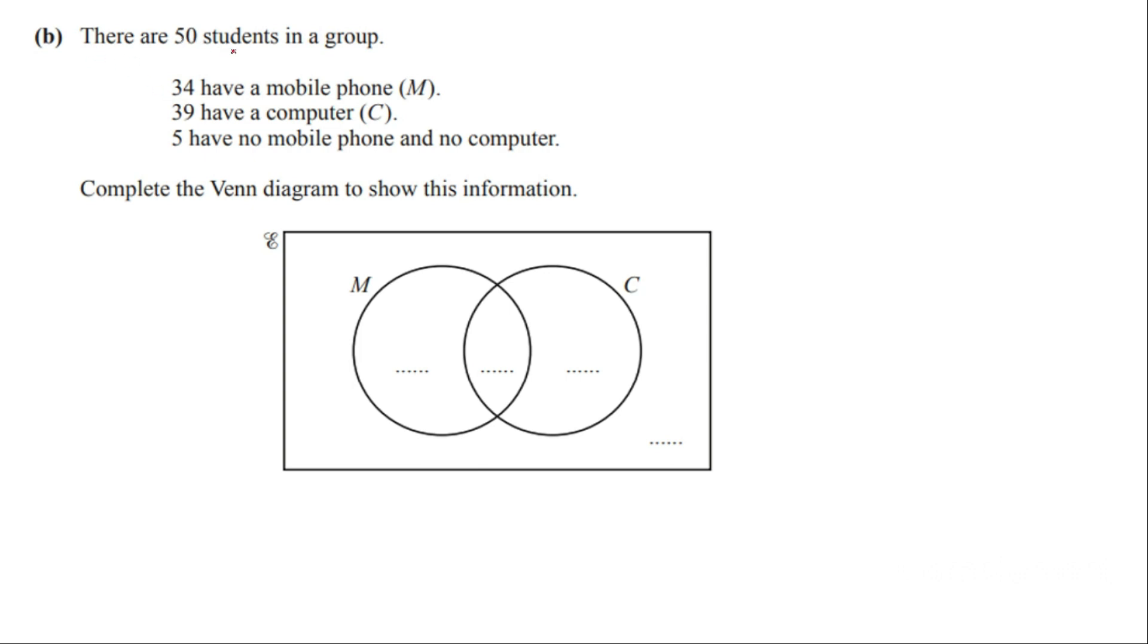Question 2. There are 50 students in the group. 34 have mobile phones. That means the number of students with mobile is going to be 34. Which technically means that all the data, the sum of all the numbers inside the circle M should be 34.